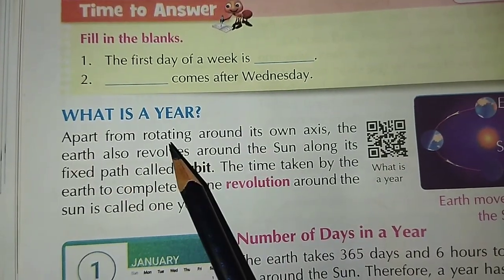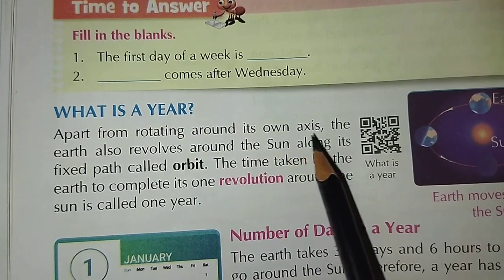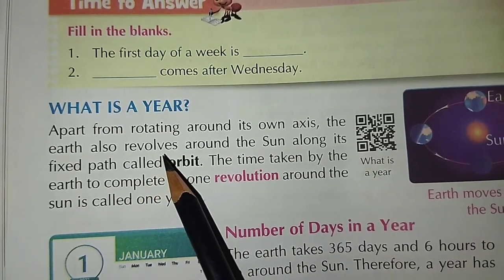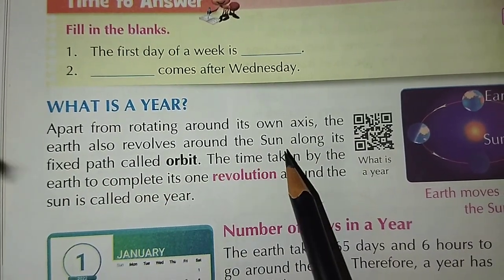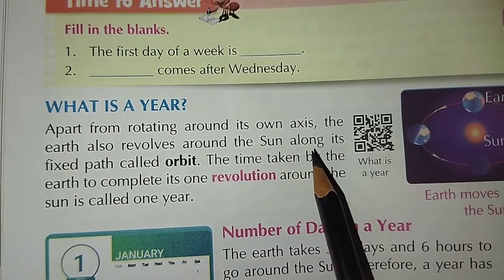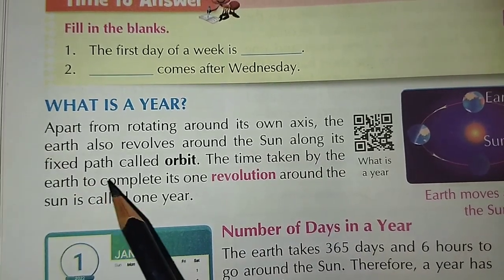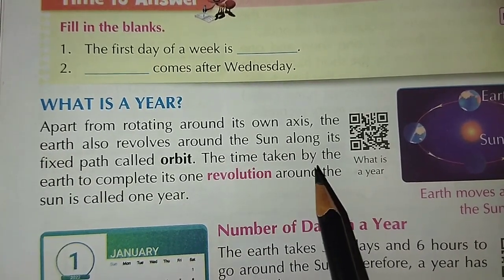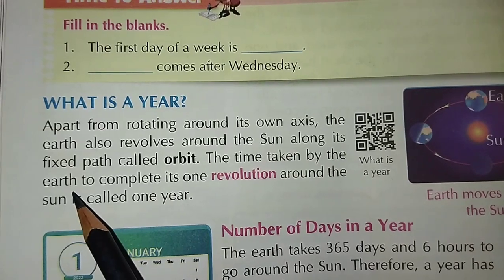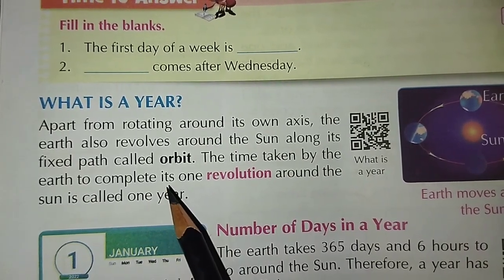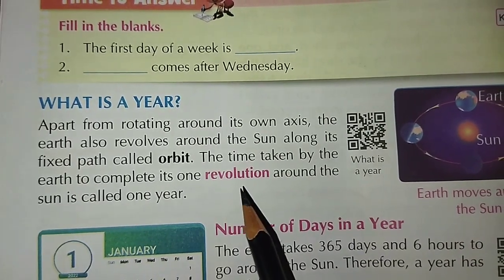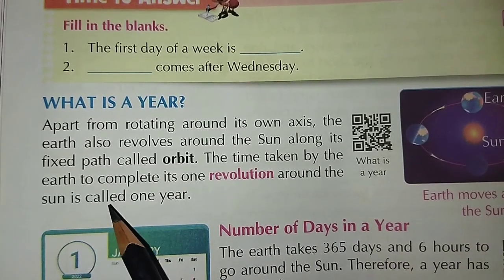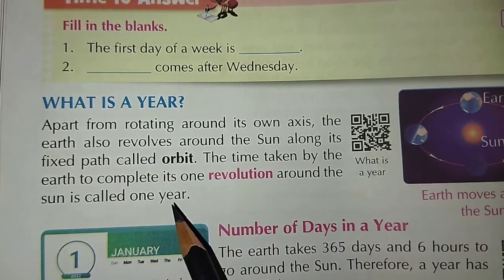What is a year? Apart from rotating on its own axis, the Earth also revolves around the Sun along its fixed path called orbit. The time taken by the Earth to complete its one revolution around the Sun is called one year.